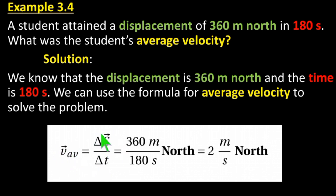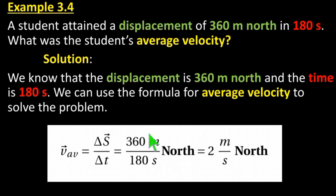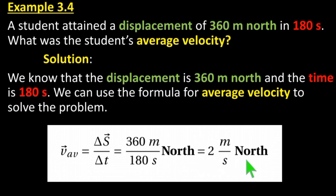Average velocity equals displacement divided by time. That is 360 meters north divided by 180 seconds, which equals 2 meters per second north. Therefore, the student's average velocity is 2 meters per second north.